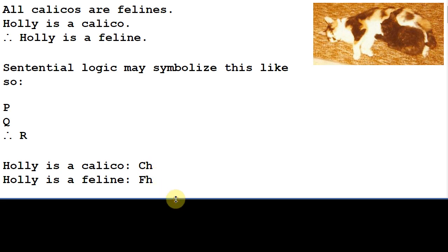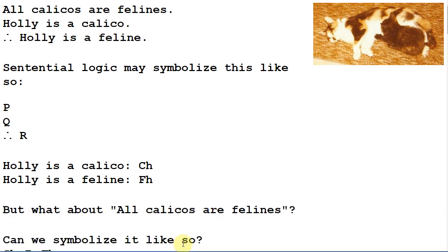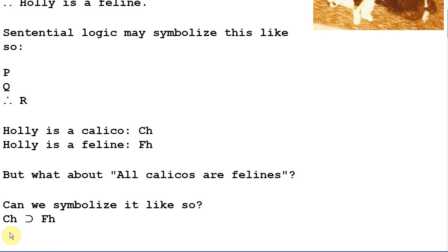And we put the predicate first and the subject second because this is a predicate function or propositional function. It's like a function in a programming language or in math. So how do we want to symbolize all calicos are felines? Can we symbolize it like this? If Holly is a calico, then Holly is a feline? Well we can't do that because all calicos are felines doesn't mention Holly specifically. And it could just as easily tell us something about other calicos or other cats or in fact it could be true of anything at all besides Holly.